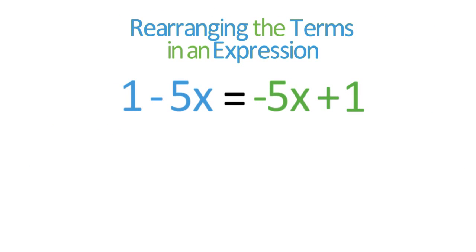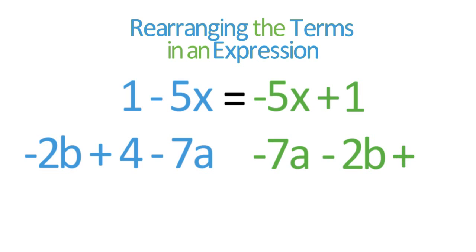consider the three-term expression -2b + 4 - 7a. Although this expression is technically correct, by convention, the variable terms in an expression are usually arranged in alphabetical order with the constant at the end.